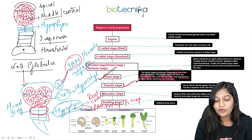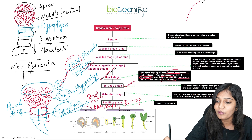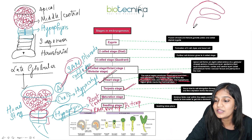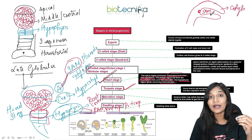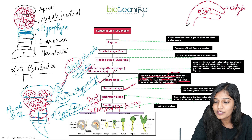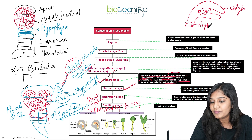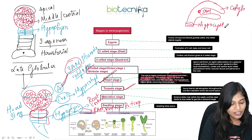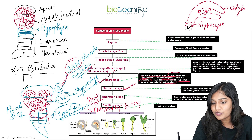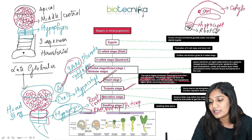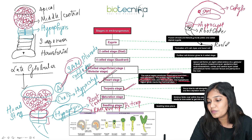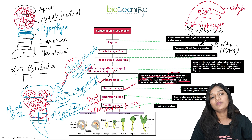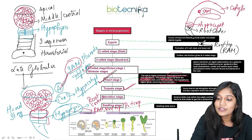After the heart stage, we see the torpedo stage, where the structures become more elongated. The cotyledons are visible at the top, arising from the apical region. The shoot apical meristem is below the cotyledons, then the hypocotyl from the central cells, followed by root cortex from the first two hypophysis cells, and finally the root tip — made up of the root apical meristem (RAM) and root cap, also called calyptra.